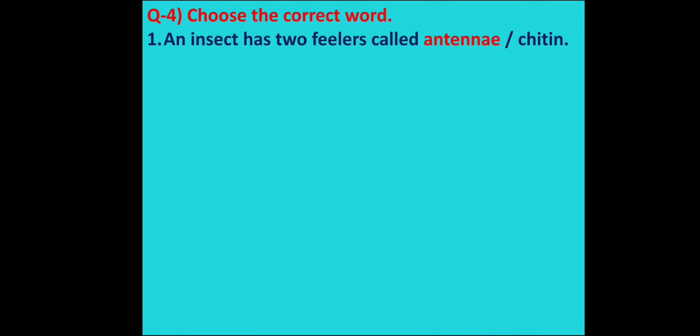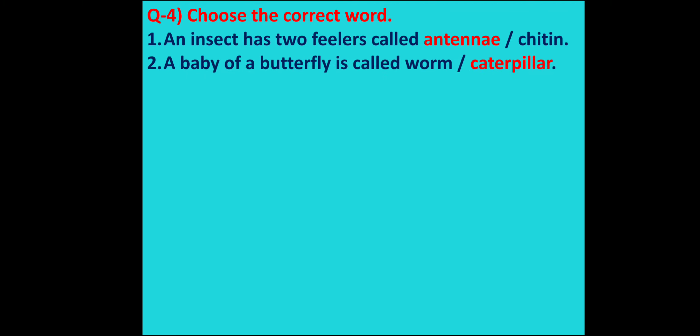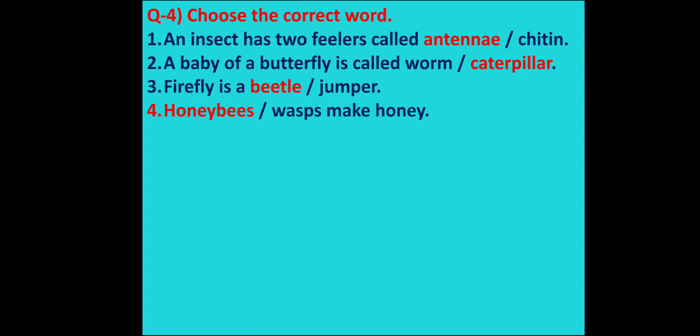Question number 4: Choose the correct word. First: an insect has two feelers called antennae or chitin? Answer: antennae. Second: a baby butterfly is called a worm or caterpillar? Answer: caterpillar. Third: a firefly is a beetle or jumper? Answer: beetle. Fourth: honeybees or wasps make honey? Answer: honeybees. Fifth: mosquitoes breed in dirty or clean water? Answer: dirty.